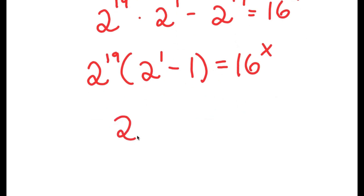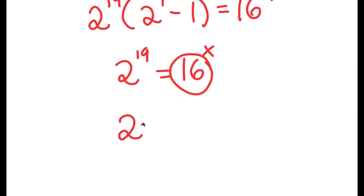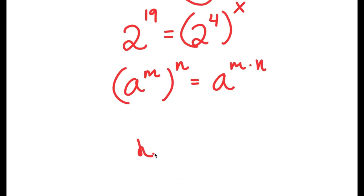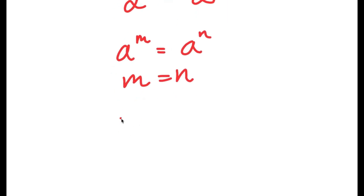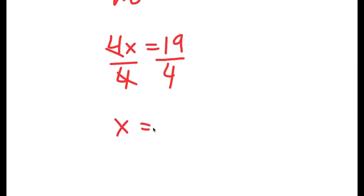Since 2 to the power of 1 minus 1 equals 1, I have 2^19 equals 16^x. Now 16 is the same as 2 to the power of 4, so I have 2^19 equals 2^4 to the power of x. Using the rule a^m to the power of n equals a^(m times n), that gives 2^(4x). Since the bases are equal, 19 equals 4x. Dividing both sides by 4, x equals 19 over 4.